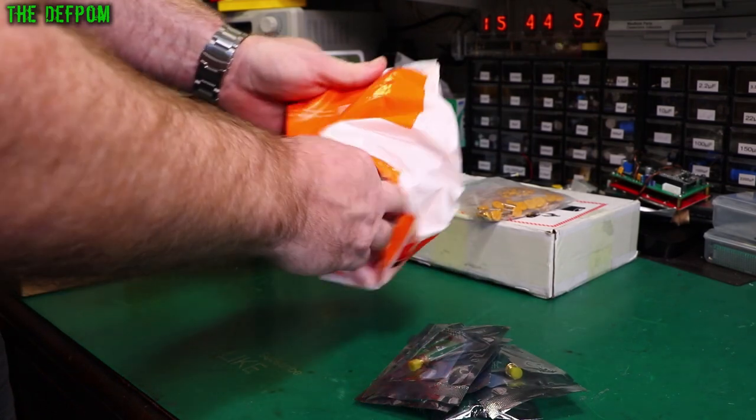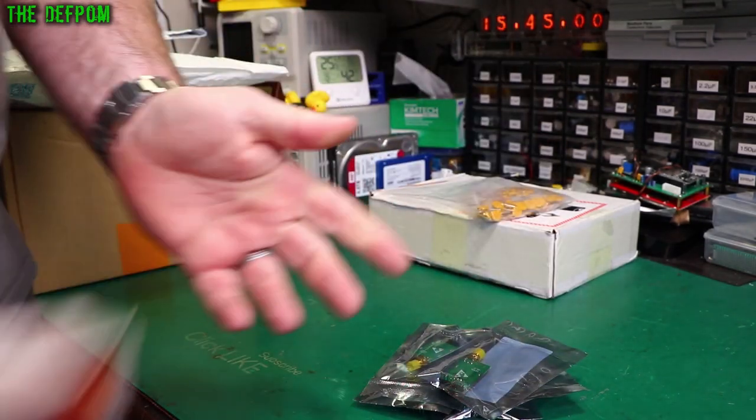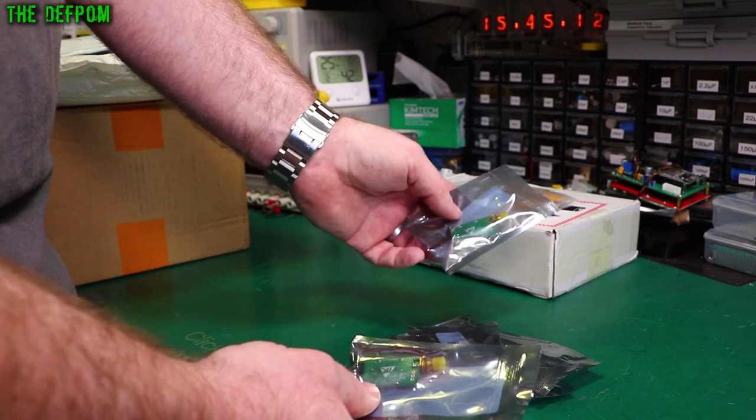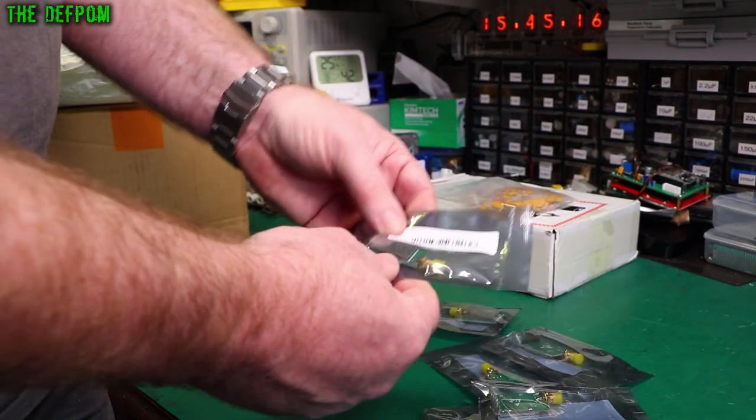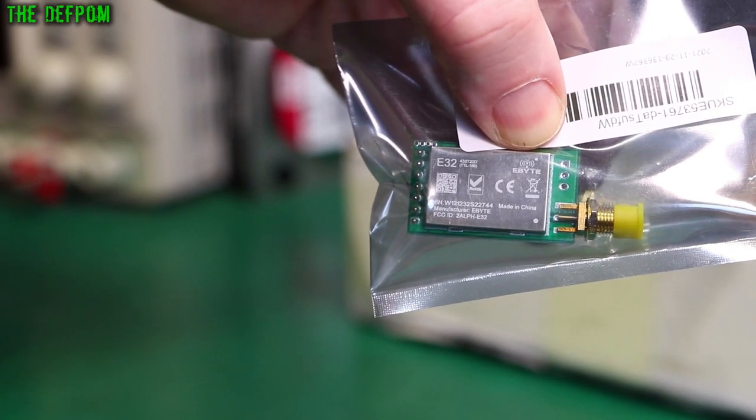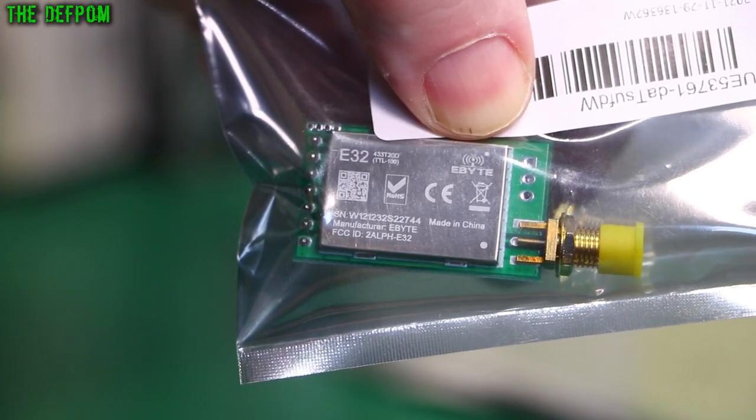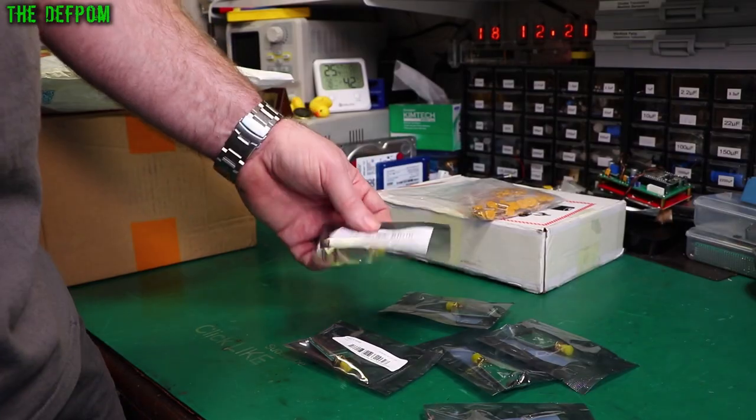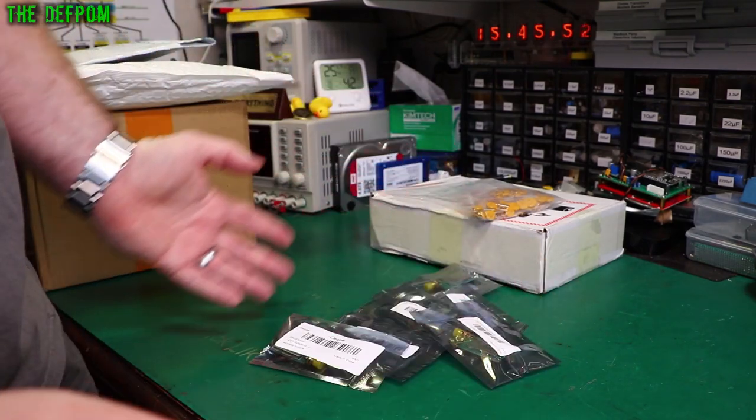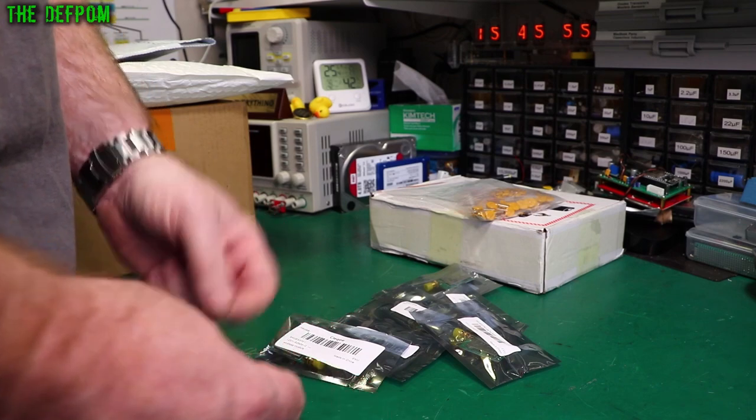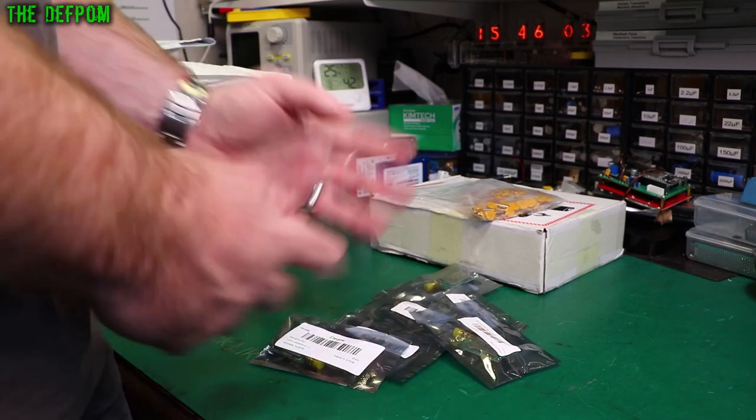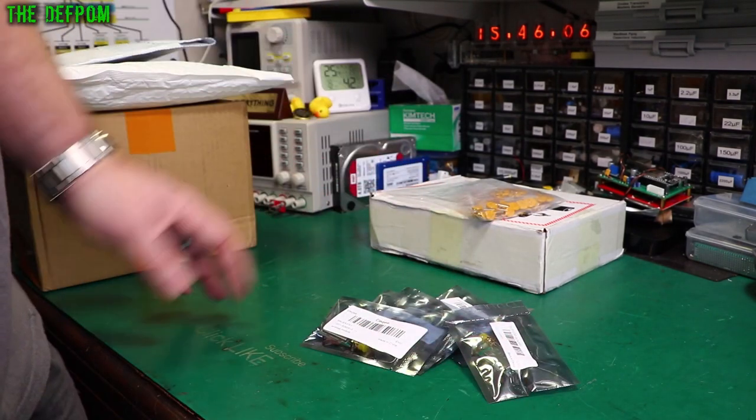Another package from Banggood. LoRa modules, stocking up again. E32 modules from E-Byte. These are the 100mW version. There's a 433MHz T20D version. I'm getting different versions because I'm running out of available bandwidth on the band I'm currently using. You can only use so much legally, you're not allowed to use too much. It's part of the things for the ISM band, you can only transmit for so long. So I'm at the limit of what I can get away with using. What I'm doing now is looking at different bands, so I can spread across different bands and that way I'm not breaking any rules.